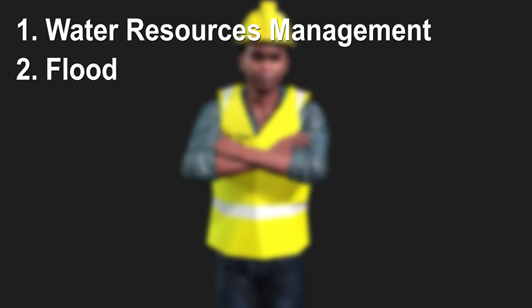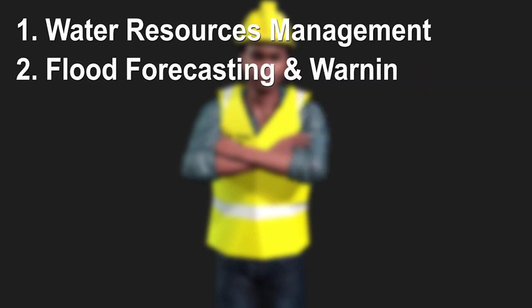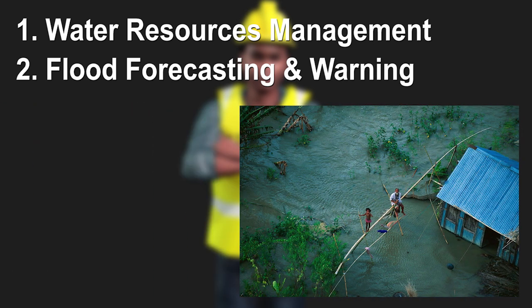Number two: flood forecasting and warning. By monitoring river discharge, we can anticipate and warn people of potential flooding events. High discharge rates indicate increased risk of flooding, allowing communities downstream to take necessary precautions and evacuate if needed.